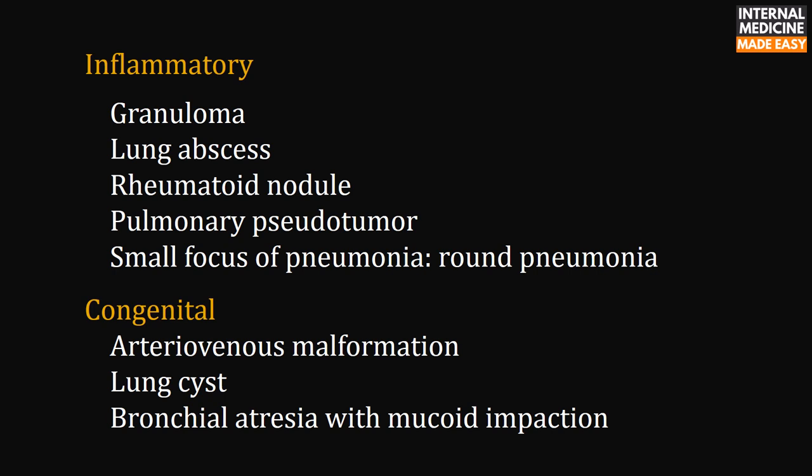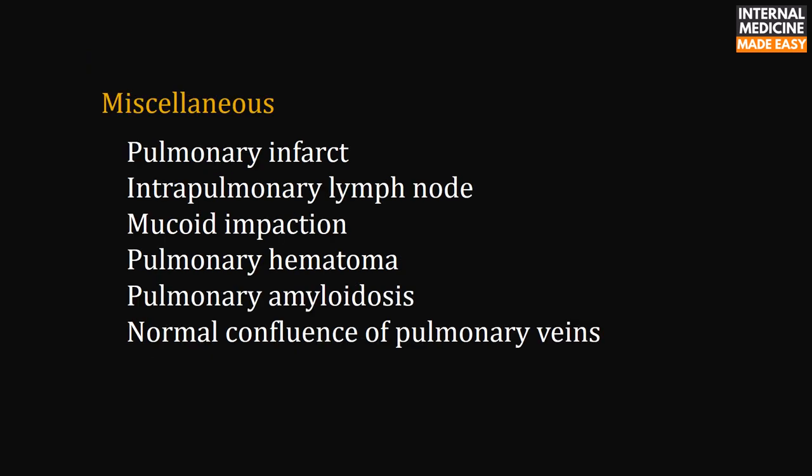Inflammatory causes include granuloma, lung abscess, rheumatoid nodule, pulmonary pseudotumor, and small focus of pneumonia, also called round pneumonia. Congenital causes include arteriovenous malformation, lung cyst, and bronchial atresia with mucoid impaction. Miscellaneous causes include pulmonary infarct, intrapulmonary lymph node, mucoid impaction, pulmonary amyloidosis, and normal confluence of pulmonary veins.